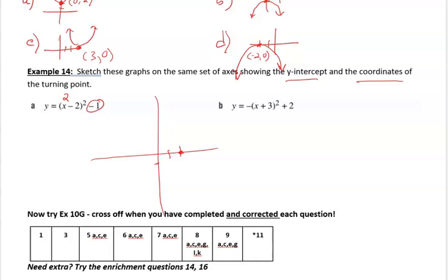That's 2, that's negative 1. So that's actually my point there, and it's positive, so it's going to look like that. That turning point is 2, negative 1. And I'm going to write that this one is the graph of y equals x minus 2 squared minus 1.